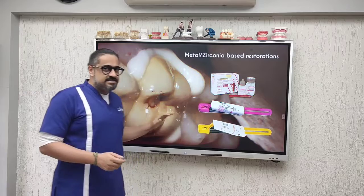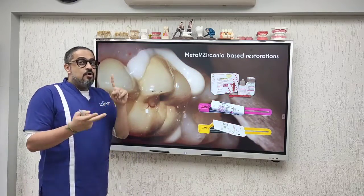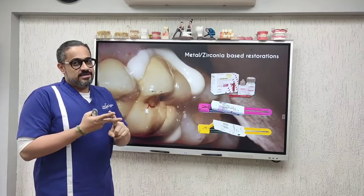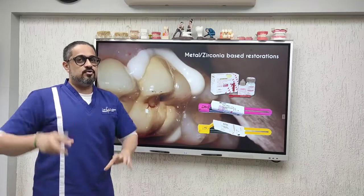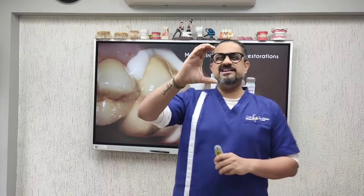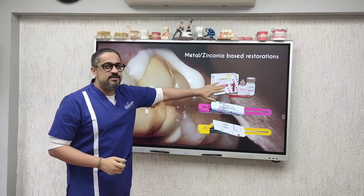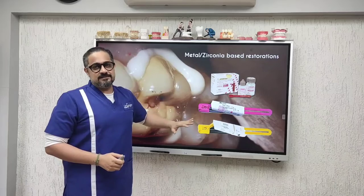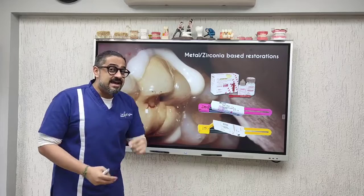I am going to oversimplify this. Imagine in your practice that you are luting a metal or zirconia-based restoration — a PFM or a PFZ type of prosthesis. If you have very good clinical crown height, really nice tall crown with good taper, feel free to go ahead and use your regular GIC. If you want better marginal seal and less marginal leakage, then I would recommend starting to use RMGIC in your practice.